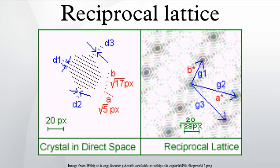In physics, the reciprocal lattice represents the Fourier transform of another lattice. In normal usage, this first lattice is usually a periodic spatial function in real space and is also known as the direct lattice.